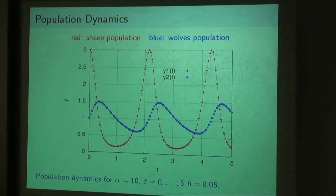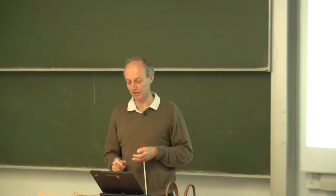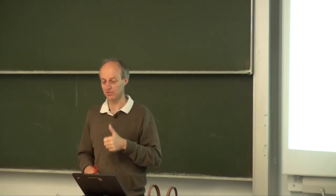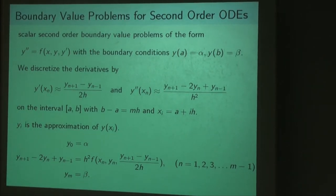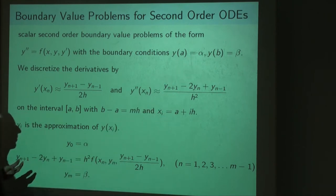If it's a second-order system, then either we need two initial values or two boundary values. For one equation of second order, either we know y(0) and y'(0) at the left border of the interval, or we know one value at the left border and one at the right border — and that's what we call a boundary value problem.